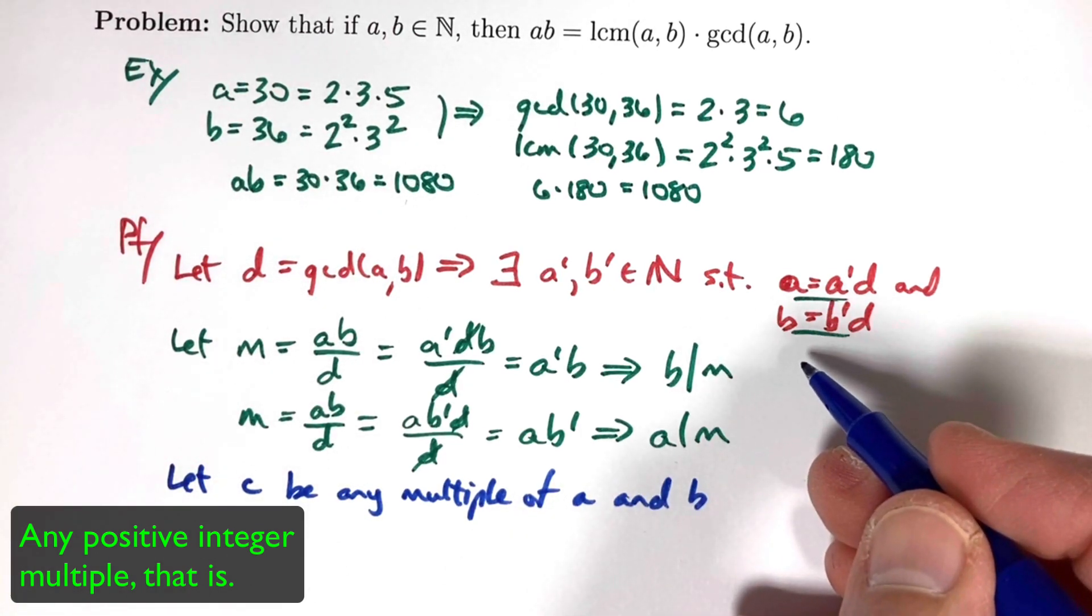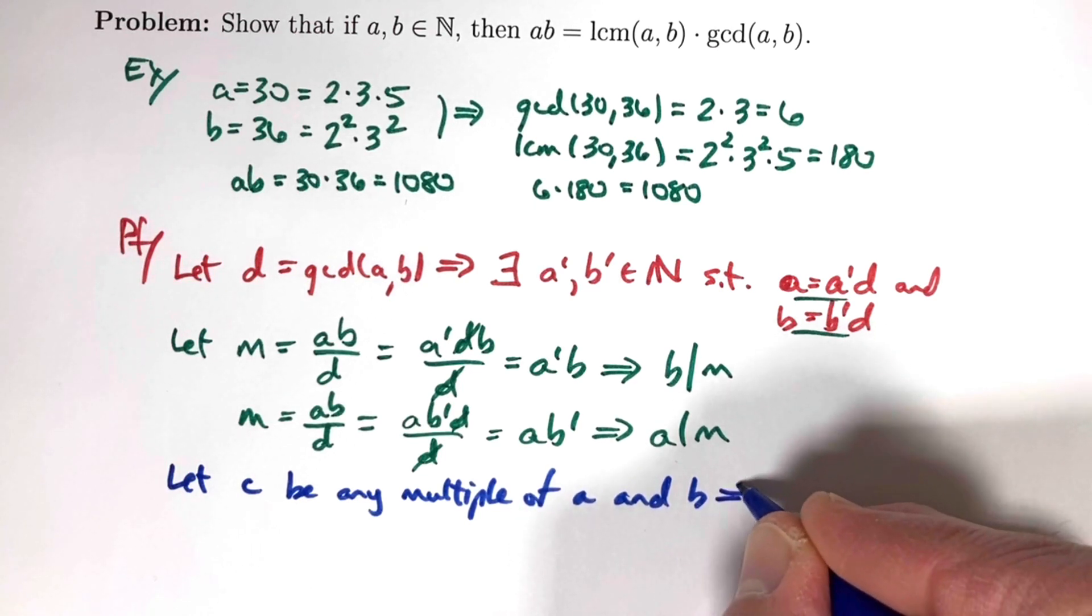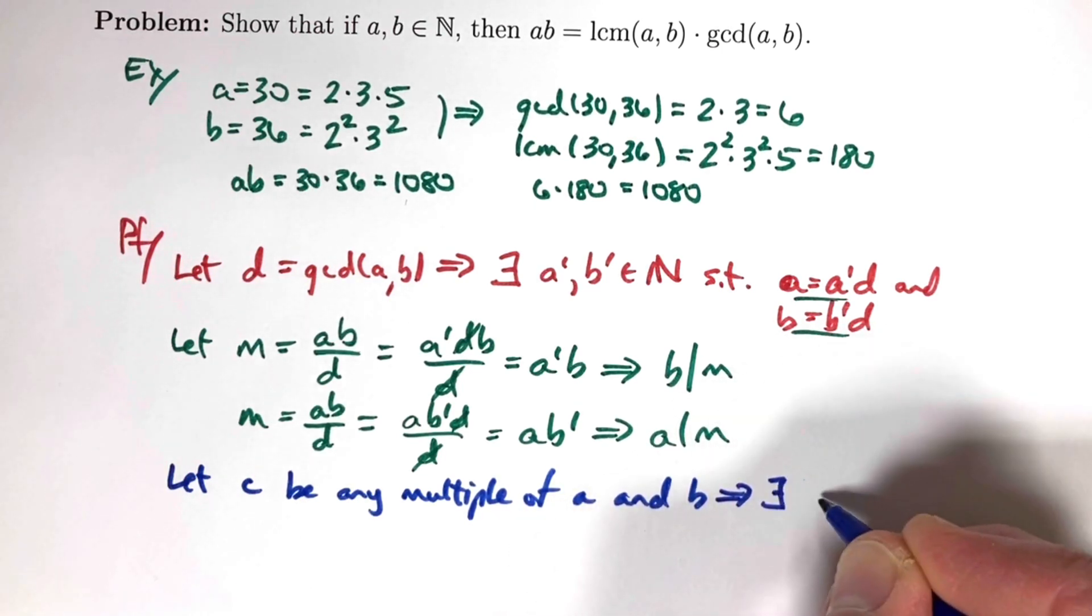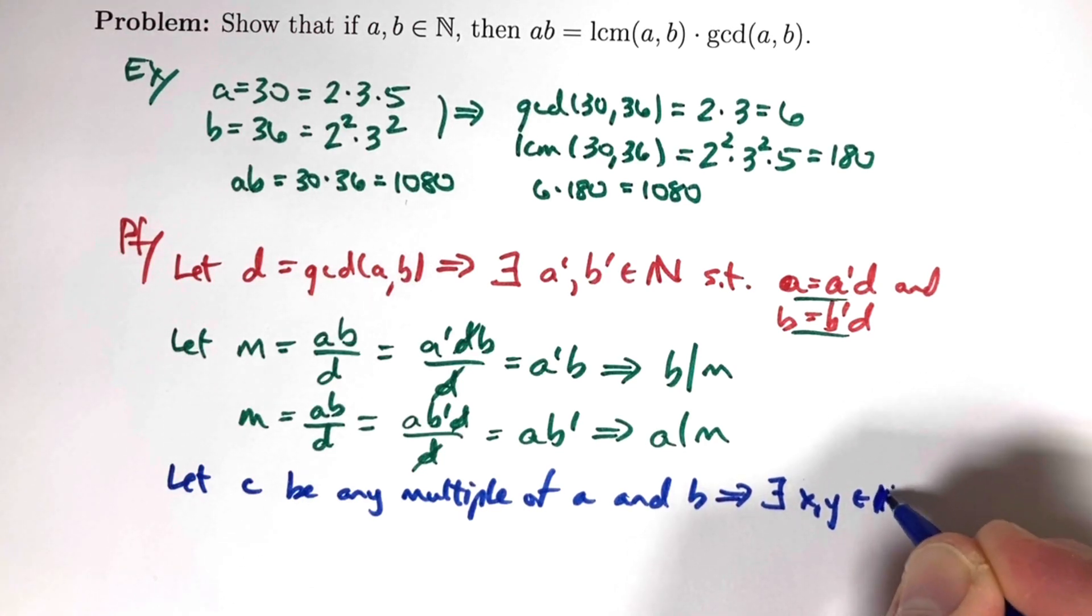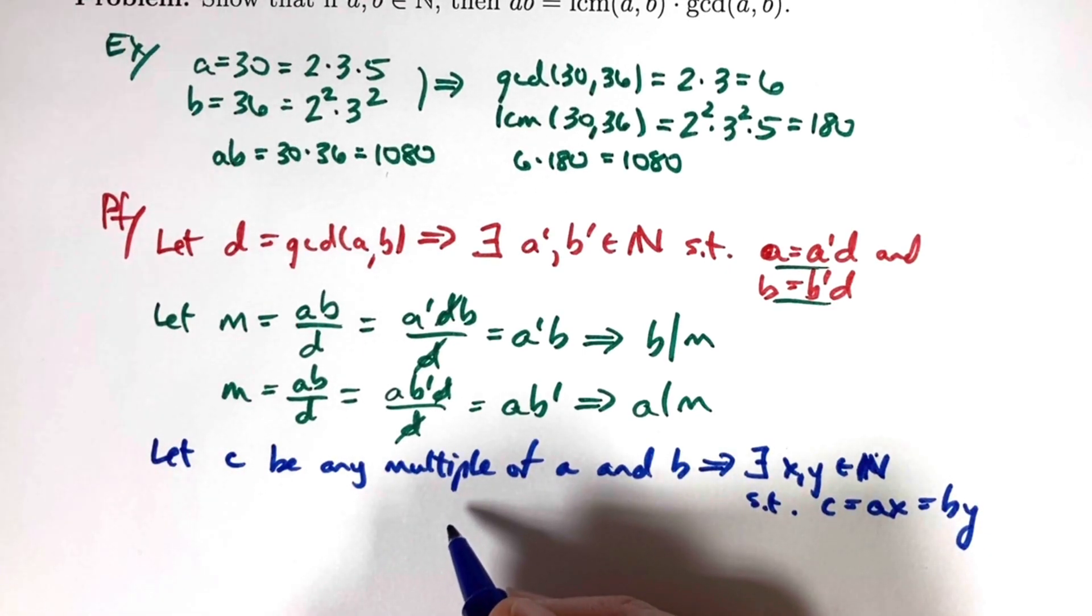We're going to show that C divided by M is, in fact, an integer. And we will need to use something we haven't used yet. The fact that D is not only a divisor of A and B, but the greatest common divisor. Using the fact that C is a multiple of A and B, we can say that there exists, say, X and Y that are natural numbers, such that C equals A times X, and it also equals B times Y.